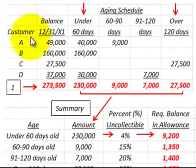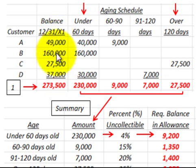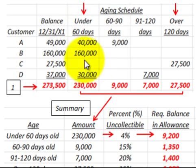For an aging schedule, you'll have your customers identified and then you have their balances. We're going to look at the year-end balance on the accounts receivable that are sitting here. Then you classify these by the number of days that they're outstanding for each of the customers.